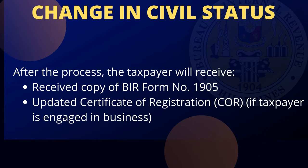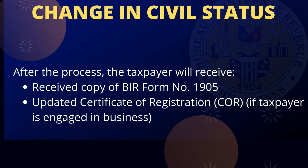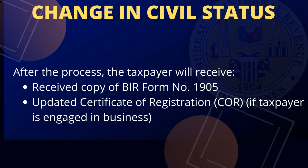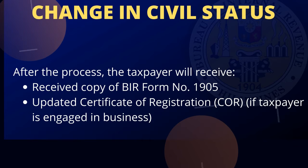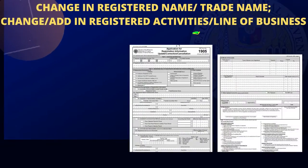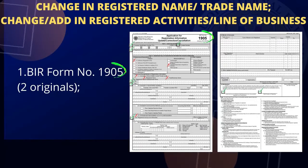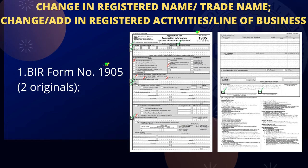After the process, the taxpayer will receive the received copy of BIR Form Number 1905 and updated certificate of registration, if the taxpayer is engaged in business.